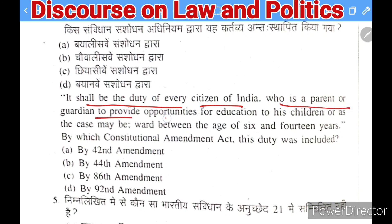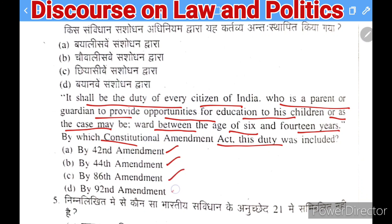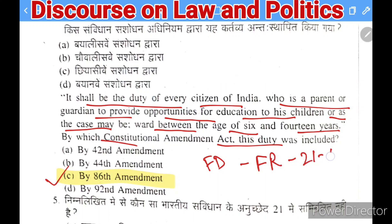Next question: it is the duty of every citizen of India who is a parent or guardian to provide opportunities for education to their children or ward between the ages of 6 and 14 years — by which constitutional amendment was this included? Options: 42nd, 44th, 86th, or 92nd amendment. The right answer is the 86th Amendment of 2002, which inserted Article 21A as a fundamental right and also added this provision in fundamental duties.